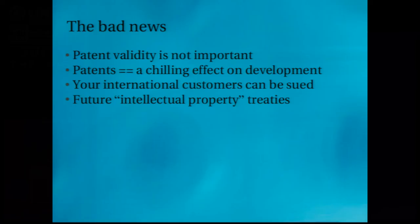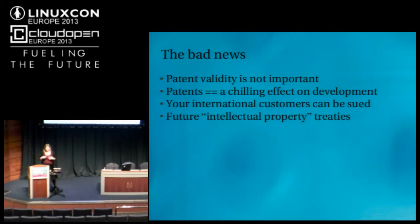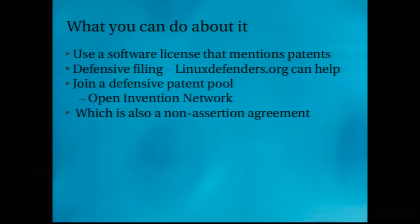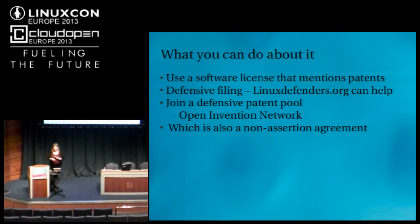Just to recap: patent validity is unfortunately not important — you can get a letter whether that patent is good, mediocre, or just a big pile of crap. It is a chilling effect on development. Your international customers can be sued, which sucks. And future intellectual property treaties could change the landscape so that a place where you thought you were safe becomes no longer safe. What you can do: use a software license that mentions patents, do defensive filings — we can help you do that — join a defensive patent pool. OIN is also a non-assertion agreement where we get companies to say 'I won't sue other Linux companies.'